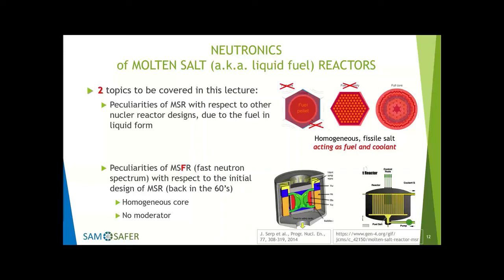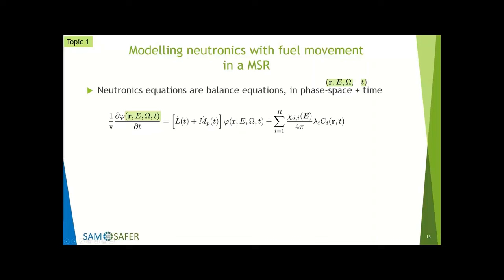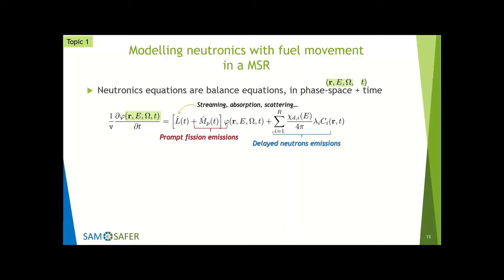It's a really different design that requires different approaches in its analysis. The neutronics equations are balance equations. We are looking at where neutrons are in space, at which energy E, and in which direction omega they're moving, at any instant in time. This balance equation pays credit to the Boltzmann equation for gases, once modified to be linear for the characteristics of neutrons propagating in a medium.